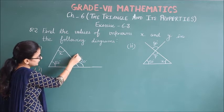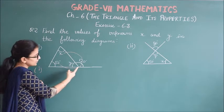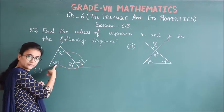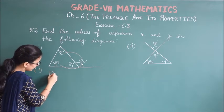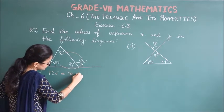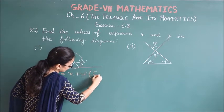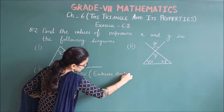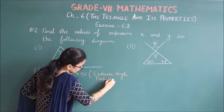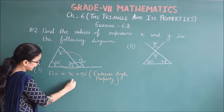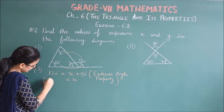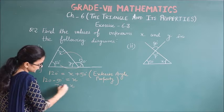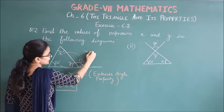First part, we have to find x and 50 and 120 which is the exterior angle. The opposite interior angles are x and 50. Using exterior angle property, 120 degrees is equal to x plus 50 degrees. So x equals 120 minus 50 that is 70 degrees.